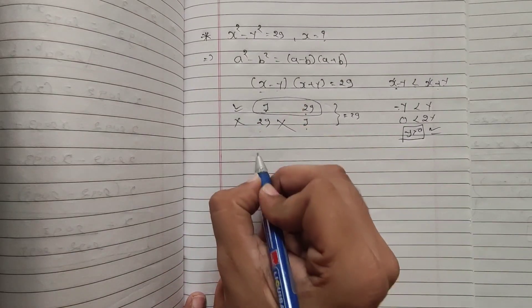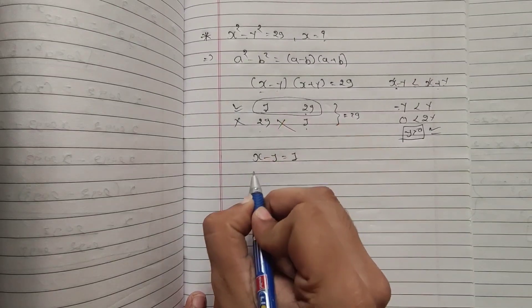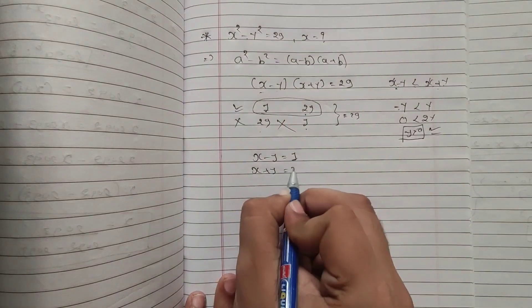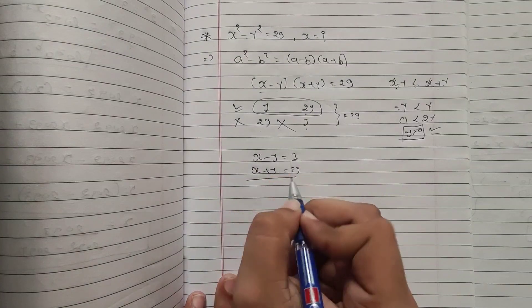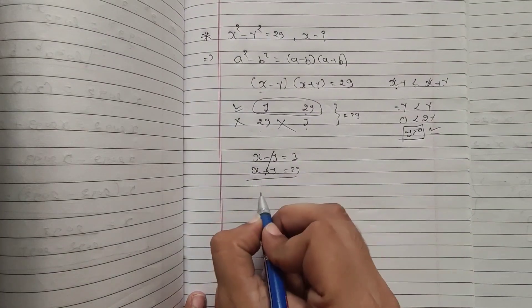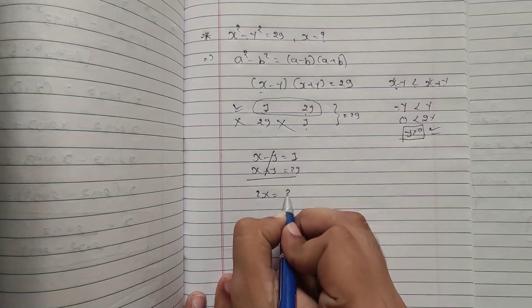So according to this, x minus y equal to 1, x plus y equal to 29. Now if I add both of these equations, y and minus y cancel out, 2x equal to 29 plus 1, 30.